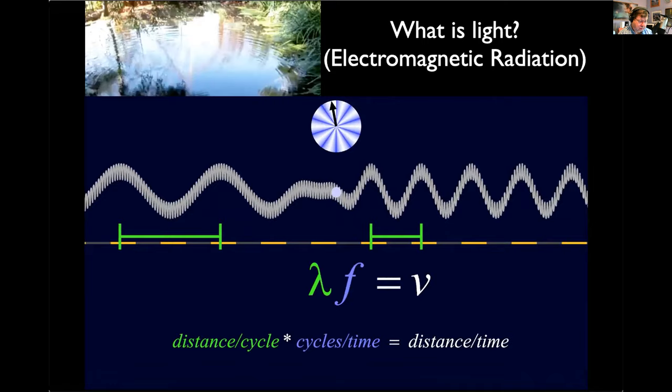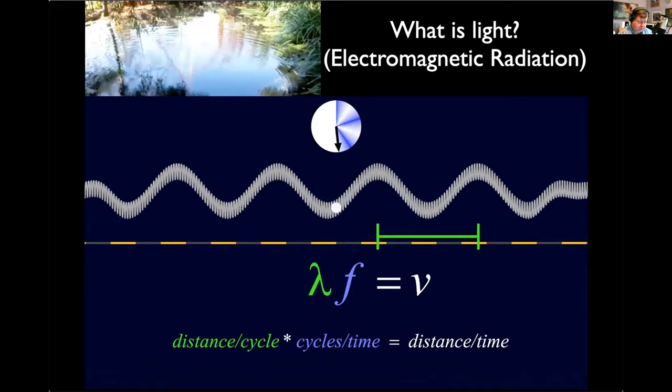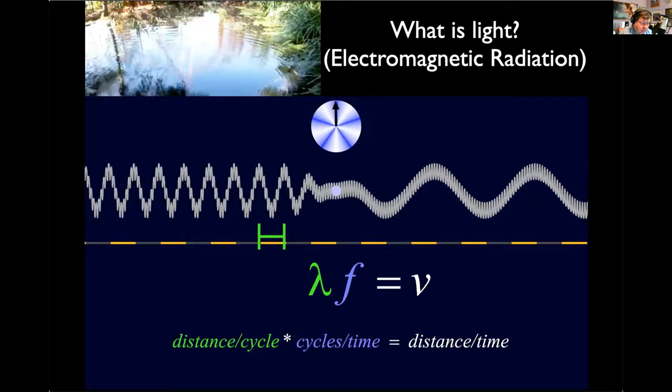A wave with longer wavelength must have a lower frequency. Shorter wavelengths have higher frequencies.